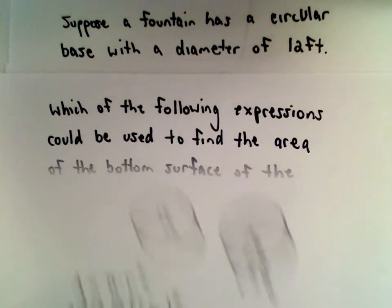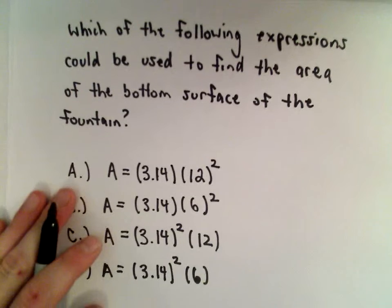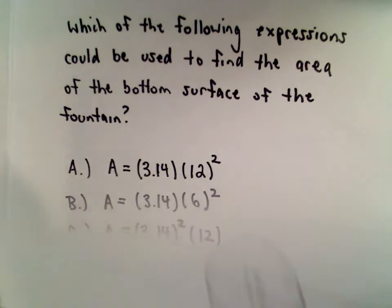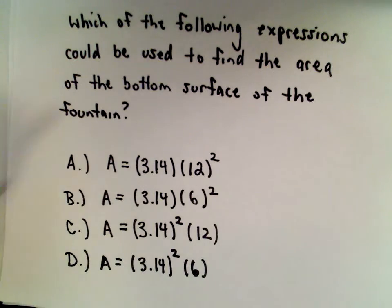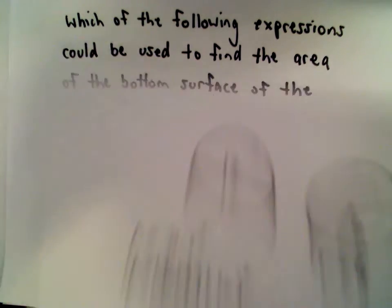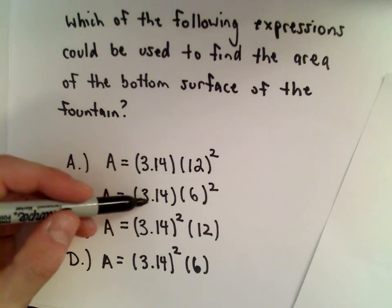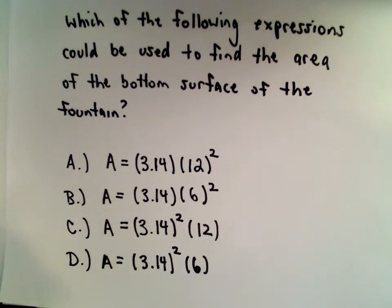So this is just one of those questions. It's just a matter of really knowing the formula. So in this case, our answer, let's see, so 3.14 times 6 squared, it looks like answer choice B would be our solution. We've got 3.14 multiplied by 6 squared.